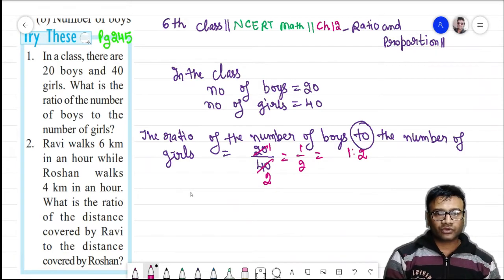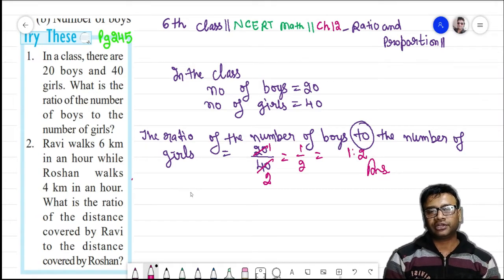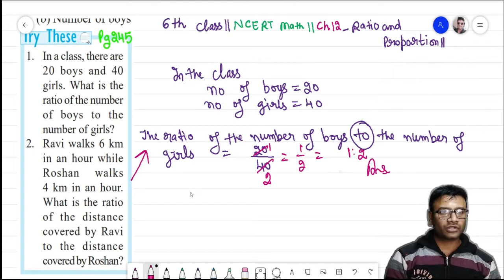Have you got it? 1 ratio 2 is the answer which we need to find out. And the statement we have written here. Is that clear? It's very easy to do.